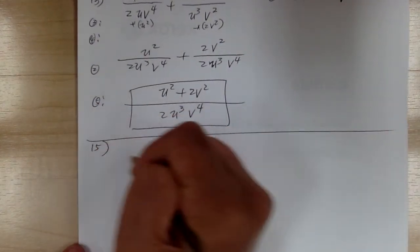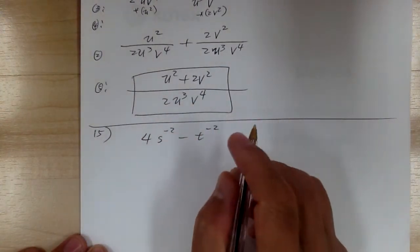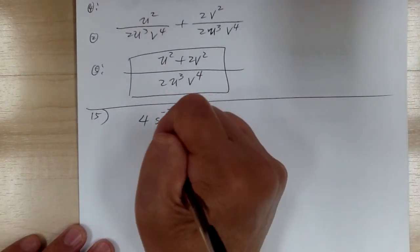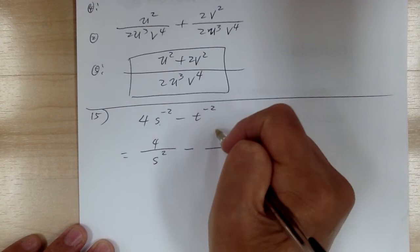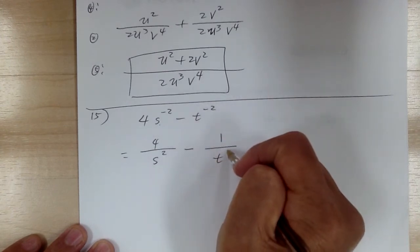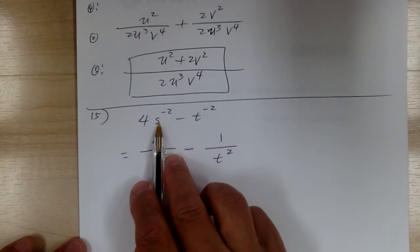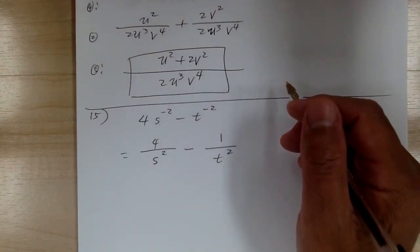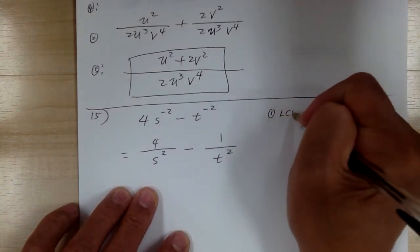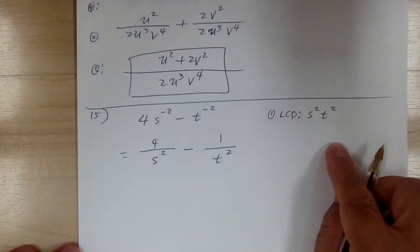Let's go to number fifteen. You have 4s to the negative two, minus t to the negative two. You have to be extremely careful — the exponent is only for what is immediately before it. So the four does not get flipped over; only the s gets flipped to the bottom, giving four over s squared. The t gets flipped to the bottom, giving one over t squared. Do not flip the four to the bottom, because the exponent is only for the s — the exponent is always for what is immediately before it.